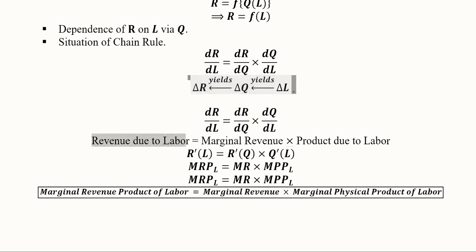Here, another explanation is written. Revenue due to labor is equal to marginal revenue times product due to labor. Here you can see that this is product due to labor or marginal product of labor, and this is the marginal revenue, and this is the revenue which is due to labor, the additional revenue.